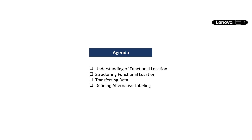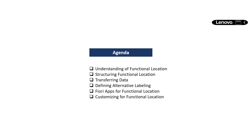We will also understand defining alternative labeling and Fiori Apps for function location. In this session especially, I will explain the concept of function location and how we can create one. Some additional topics — including customizing of function location — will be covered in upcoming sessions.